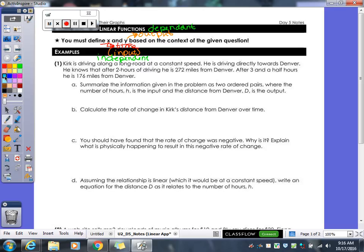Alright, so let's take a look at our first problem here. We have Kirk is driving along a long road at a constant speed. He is driving directly towards Denver. He knows that after 2 hours, he is driving 272 miles from Denver. After 3 and a half hours, he is 176 miles from Denver. Makes plenty of sense. We're talking about the distance from Denver. So he first starts really far away from Denver, he's 272 miles, then he drives some more. And now he's only 176 miles from Denver. So that means he's getting closer and closer and closer to Denver.